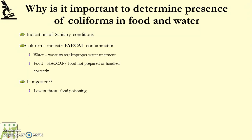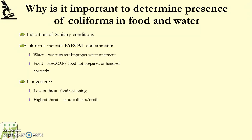So what happens if coliforms are ingested? The lowest threat is food poisoning, which is severe but not the highest threat. People can actually die if they ingest too many pathogenic coliforms that have the ability to cause infection. Best case scenario: if you ingest this bacteria in high enough numbers you will get food poisoning. Worst case is serious illness or death.